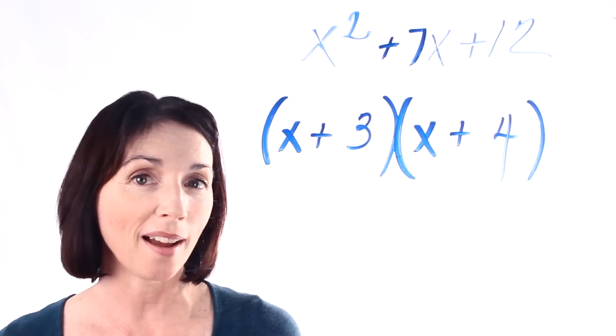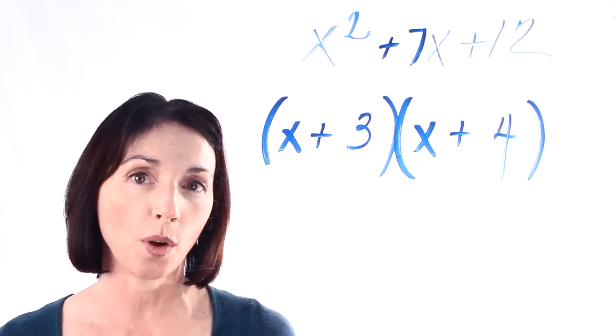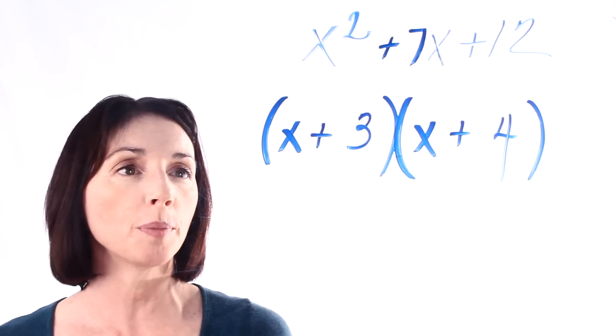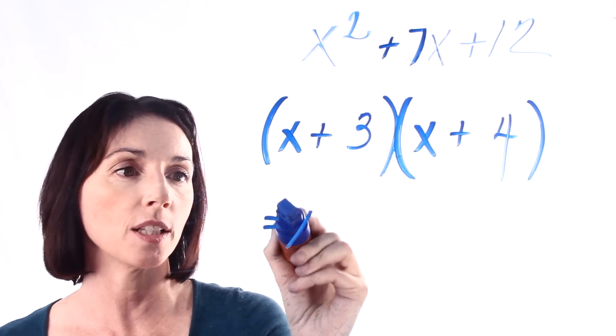Now let me show you why this is right. We can multiply it out using the FOIL method. So if I multiply this out I get x times x which is x squared.